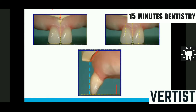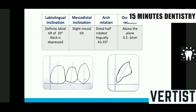I always compare the placement of central incisors to the opening batsmen of Indian cricket team — Rohit Sharma and Shikhar Dhawan. If they play well, the chances of India winning are very high. In the same manner, if the central incisor position — mesiodistal, labiolingual, as well as the occlusal plane and arch form — is perfect, then all other teeth will follow, just like our opening batsmen.